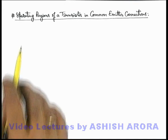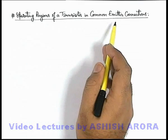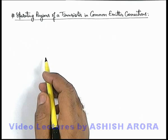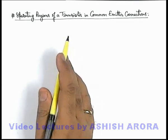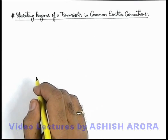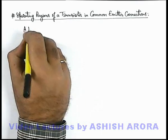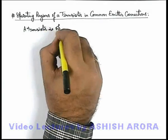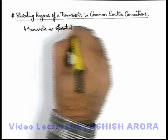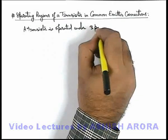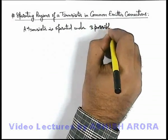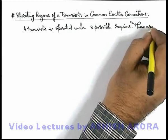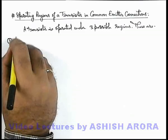Now let's discuss the operating regions of a transistor in common emitter connections. As we discussed in the previous section while studying input and output characteristics of a transistor under common emitter connections, a transistor is operated under 3 possible regions. We can discuss all these regions one by one.